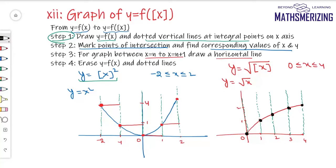When x = 1, y = 1. When x = 2, y = √2. When x = 3, y = √3. And when x = 4, y = 2. So between n and n+1, I draw a horizontal line. The graph drawn in black represents the graph of y = √(⌊x⌋).